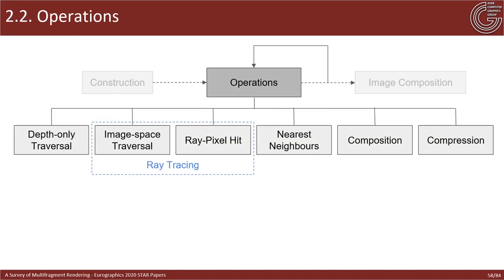Now we will discuss some of the most common operations. The most widely used ones are sequential depth traversal as well as screen and pixel space traversal — the last two usually referred to as image-space ray tracing. Other operations have also been employed in the literature that alter the data structure through connectivity, composition, or compression operations.